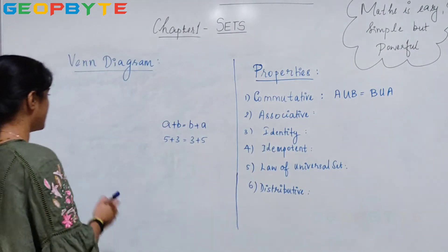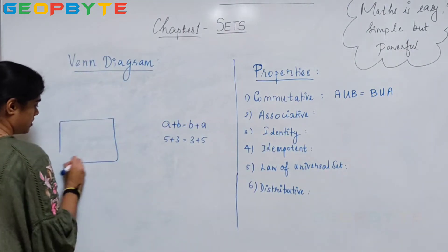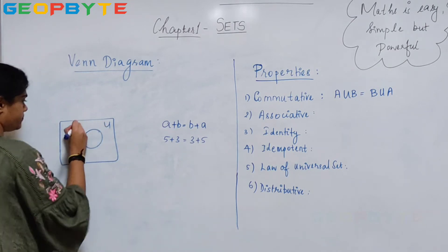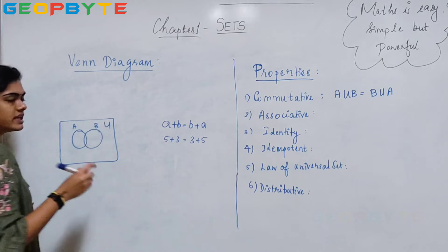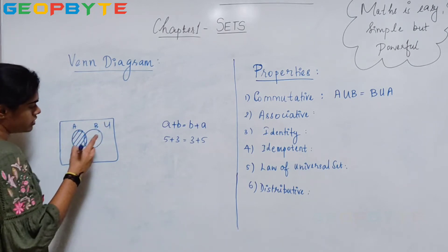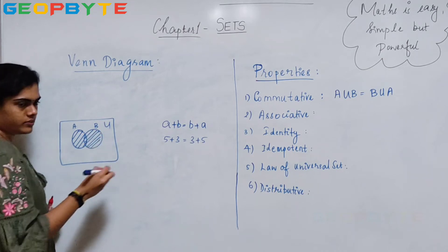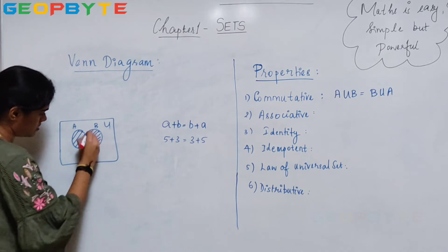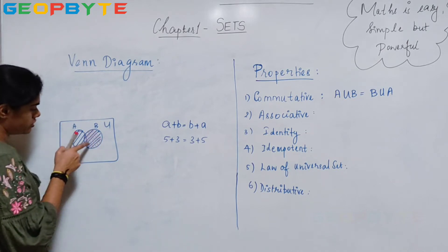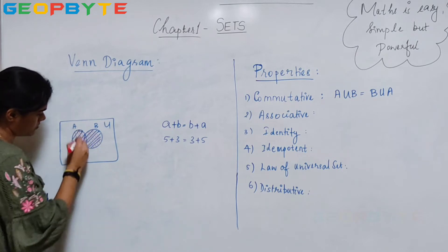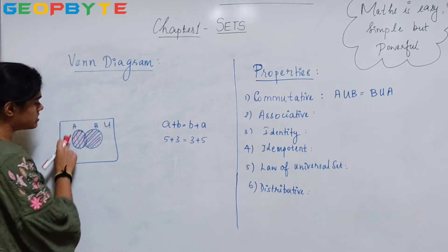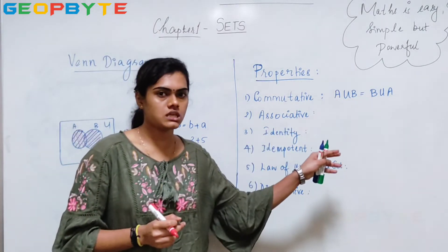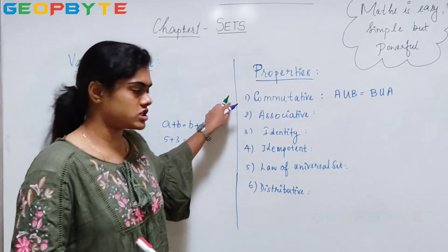We can even verify that by considering a universal set with A and B. What is my A union B? A union B. Also, what is my B union A? B union A — this circle. So the shaded region is the same. So my left hand side and my right hand side is equal. That means it satisfies the commutative property.